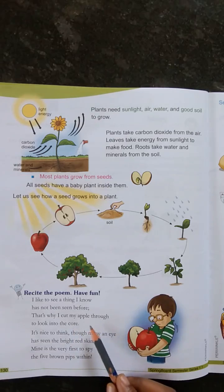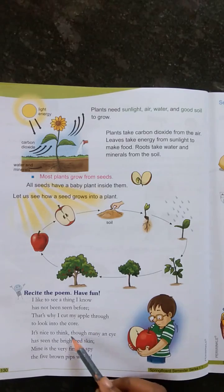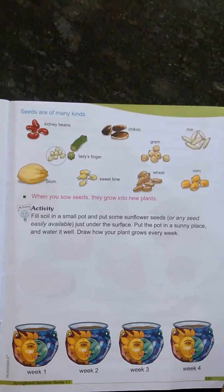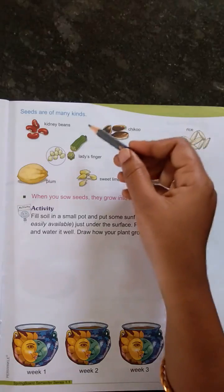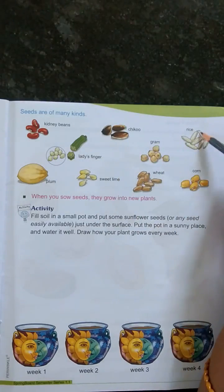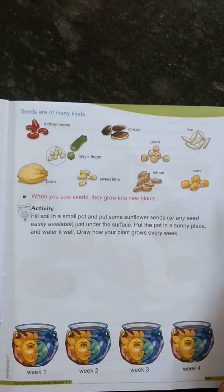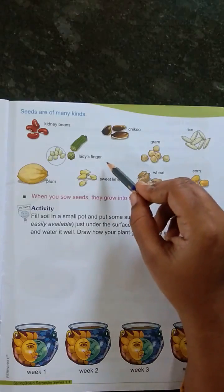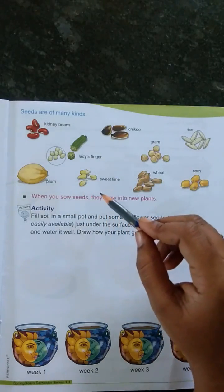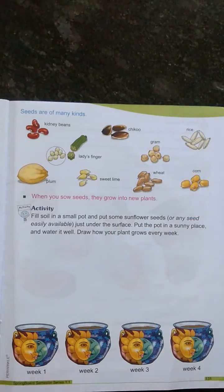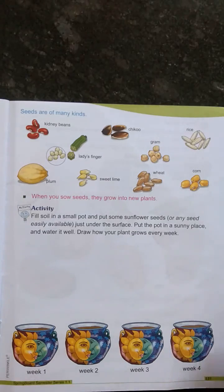Recite the poem — all of you read it well. Seeds are of many kinds. See here — kidney beans, chiku seeds, rice seeds, gram, wheat, corn, sweet lime, ladyfinger seeds, plum seeds. Seeds vary in size, shape, and texture.